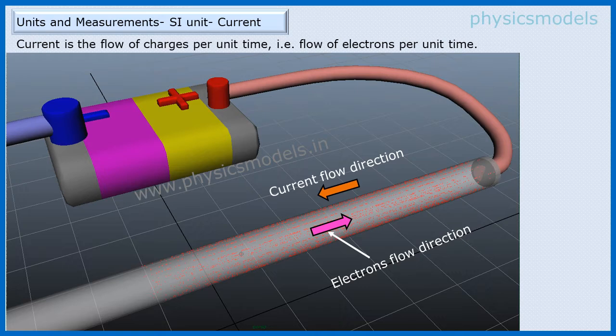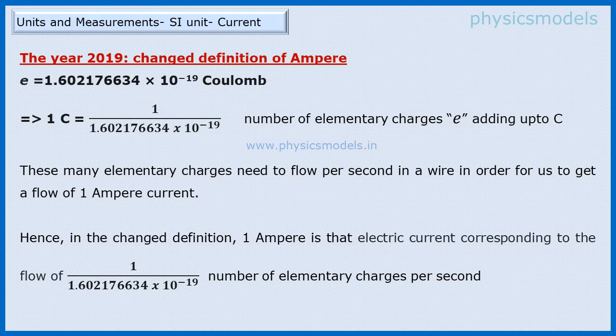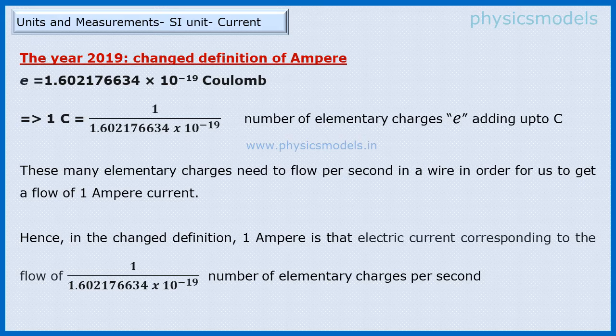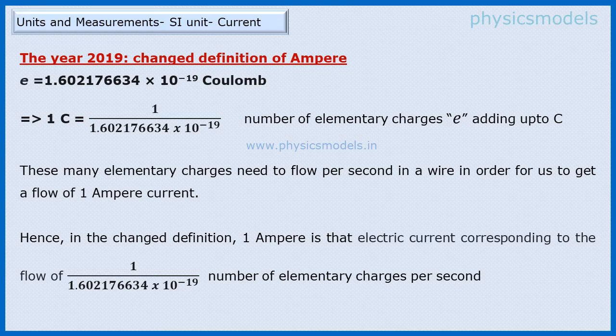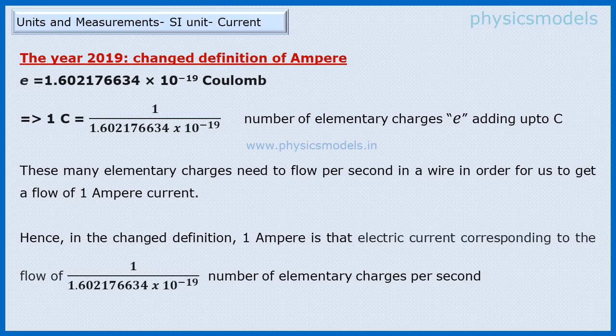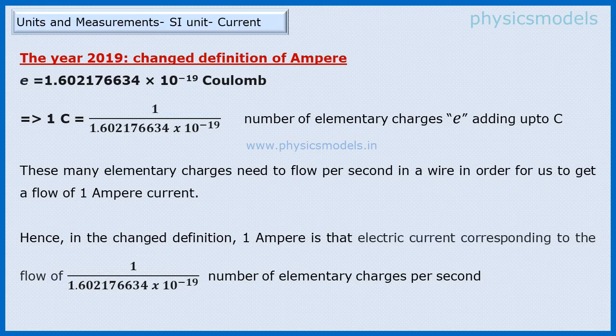Now coming to the SI definition, we need a lot of electrons to flow to create one Coulomb flowing per second through this wire or conductor. The question is how many electrons? So that's calculated here. The charge of one electron is 1.602176634×10^-19 Coulomb, so one Coulomb flow will happen when 1/(1.602176634×10^-19) number of charges flow through a wire. And that's a huge number of electrons. When these many electrons flow per second at any given point of the wire, we'll get one Ampere flow of current.